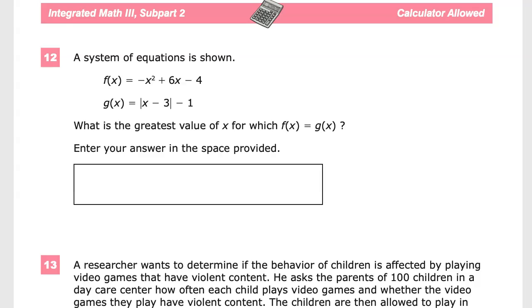A system of equations is shown: f(x) = -x² + 6x - 4, and g(x) = |x - 3| - 1. What is the greatest value of x? So that's a key point here. What's real popular to do is to give you these where you have to give a specific value, and then you write in the value for y and you miss it. So you go through all the work and then you miss it on some ridiculous technicality. Welcome to the TN ready test.